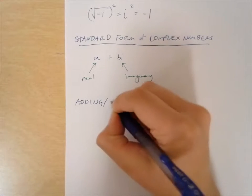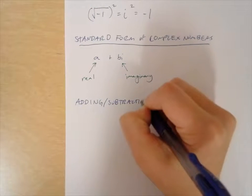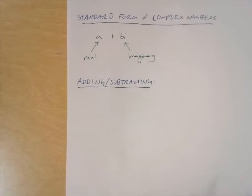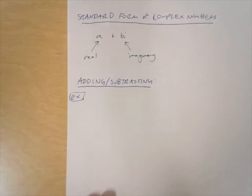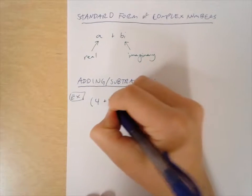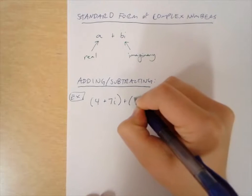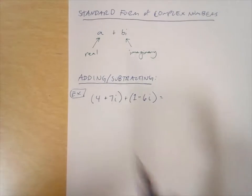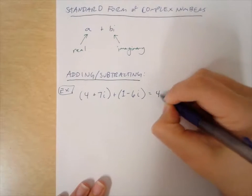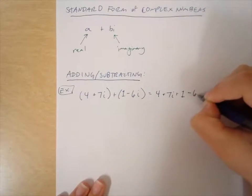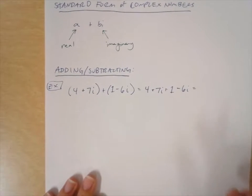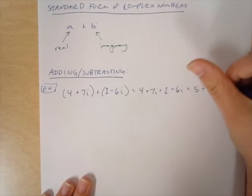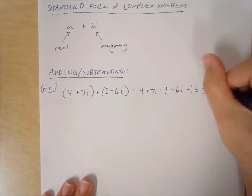Adding and subtracting — I don't want you to overthink this at all. What we do when we add complex numbers is we follow the same rules we would use if we were adding binomials. So, if we have 4 plus 7i plus 1 minus 6i, we would say this is the same as saying 4 plus 7i plus 1 minus 6i, which is the same as saying 4 plus 1 and 7 minus 6, so we would get 5 plus i. And that would be our answer.